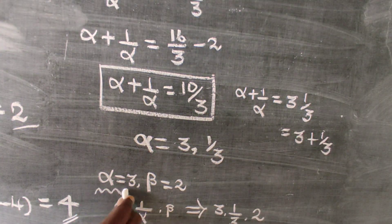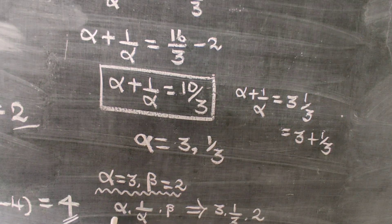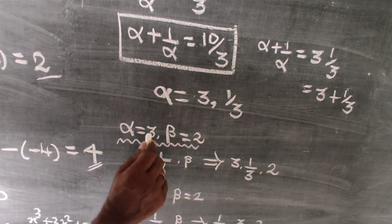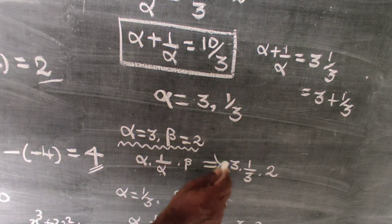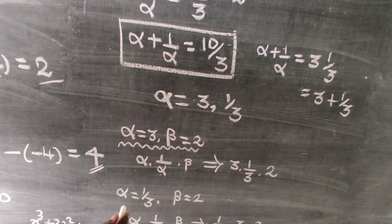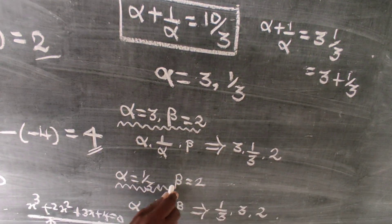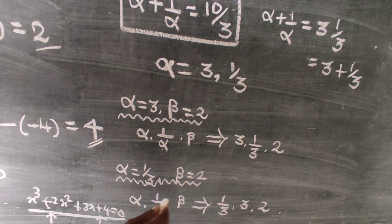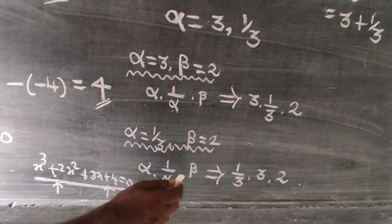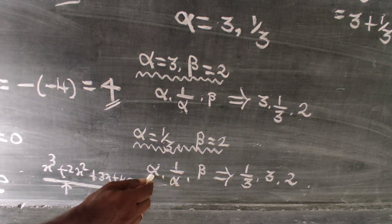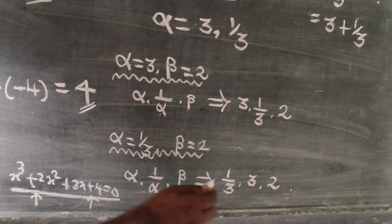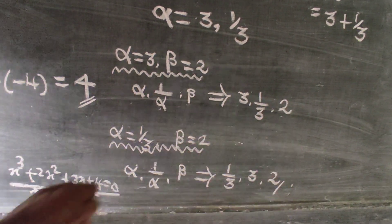Therefore, α = 3, 1/α = 1/3, and β = 2. The three roots of the equation are 3, 1/3, and 2.